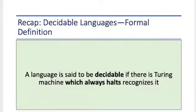Okay, so again we say that a language is decidable if there is a Turing machine which always halts, which recognizes it. Do you see the slides about the recap of decidable languages, the formal definition?